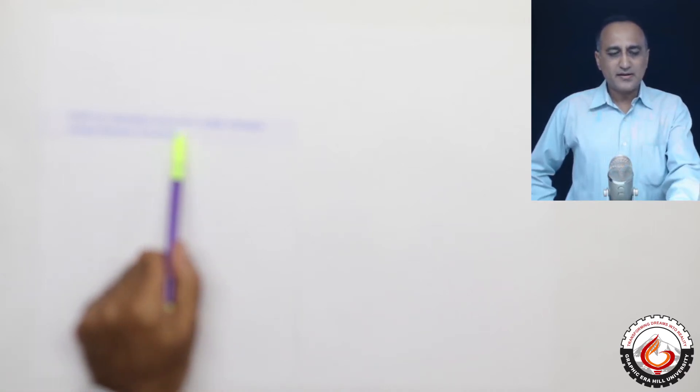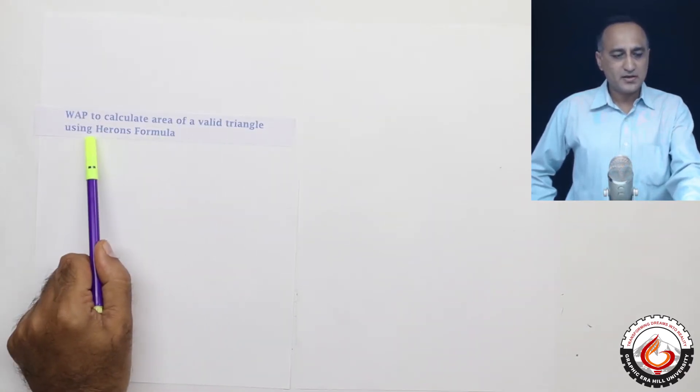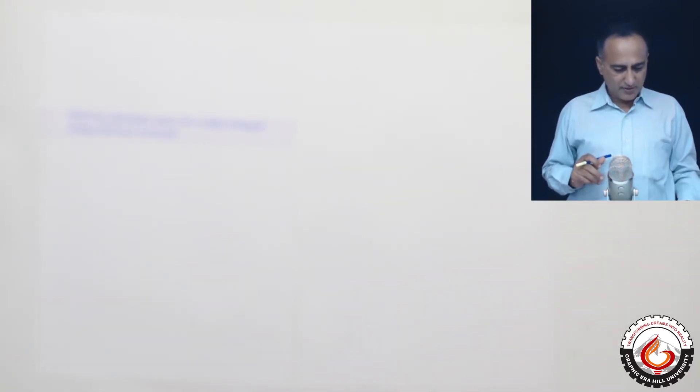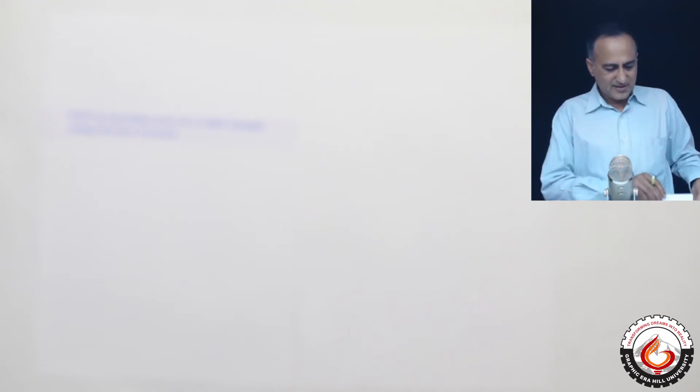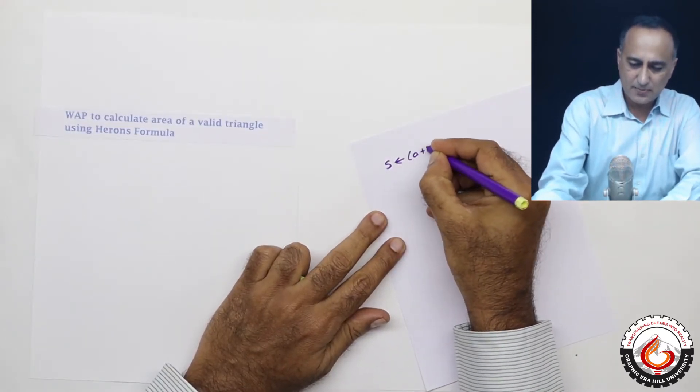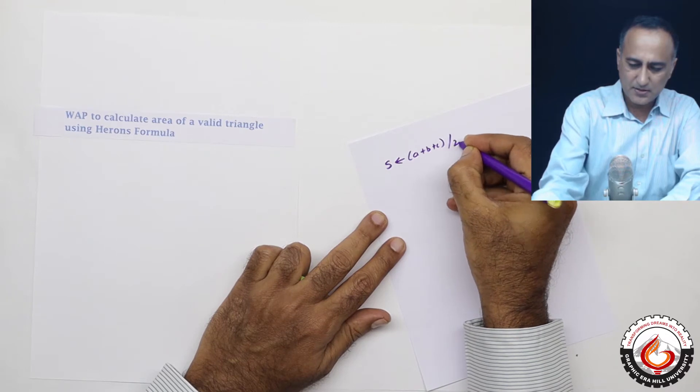Let's say we need to calculate the area of a valid triangle using Heron's formula. Now Heron's formula, for those of you who are not aware, is given as S. First we need to calculate S. S is nothing but A plus B plus C by 2.